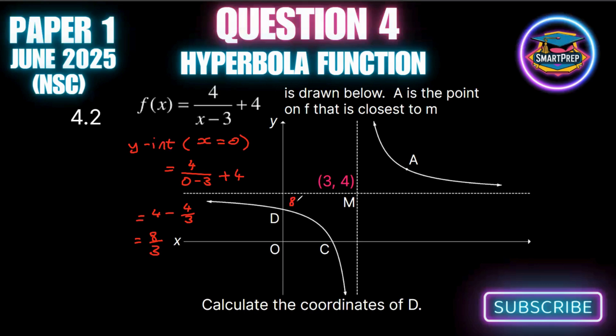So we know D is 8 over 3. That's the y value, and the x value is 0. So D is at (0, 8/3).